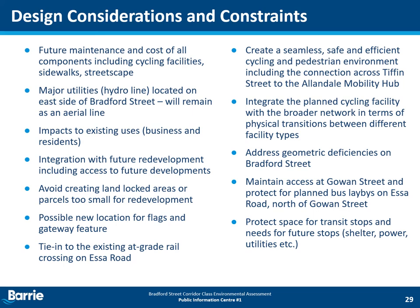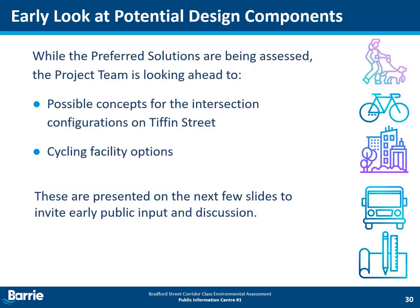As we initiate the design phase, we look at the corridor through different lenses to identify various considerations and constraints that will guide the development of the design. The points on this slide have been developed based on the study objectives and input from stakeholders. Key design considerations include technical design requirements, consideration of major utilities, transit needs such as space and types of amenities for transit stops, cycling facility needs and tie-in to the broader cycling network, and integration with developments including access. While the preferred solutions are being assessed, the project team is looking ahead to possible concepts for the intersection configurations on Tiffin Street and different cycling facility options for the corridor.